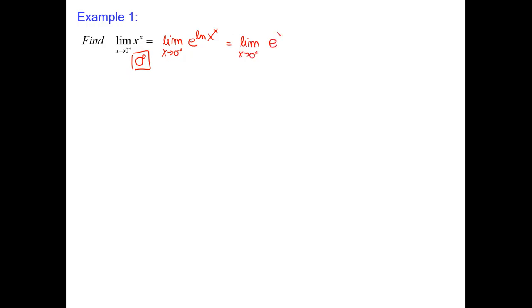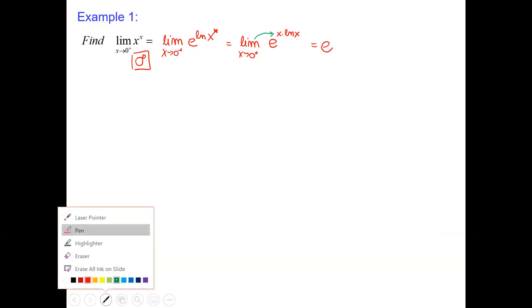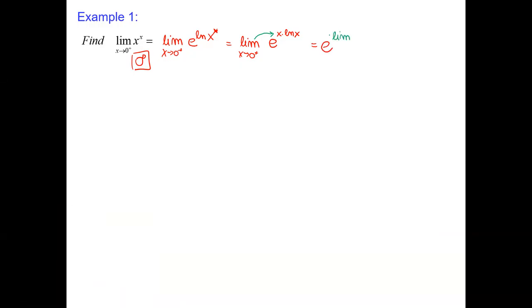Limit as x goes to 0: e, and then I can put that x in front. Because the exponential function is continuous, we will just focus on that exponent. So we have e and we will compute the limit as x goes to 0 of x times ln of x. The final answer will be e to the power of that limit.